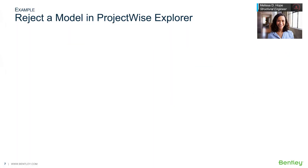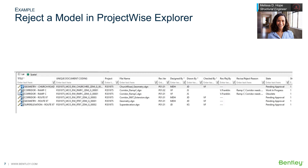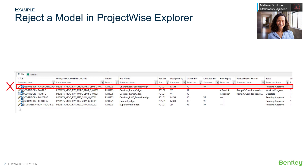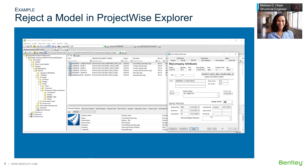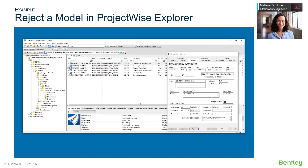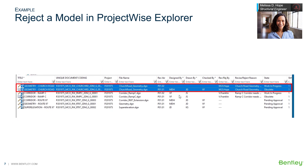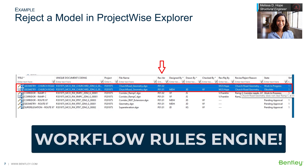Let's consider a real-life example. When the structural engineer checked the Church Road geometry model, she found that the Church Road geometry does not clear ramp C due to a bent in her OpenBridge model. Back in ProjectWise Explorer, she enters a reject reason and saves the document attributes, then rejects the document from the change state menu. A new version is created and given a new minor revision number. The whole process is made possible by the workflow rules engine.